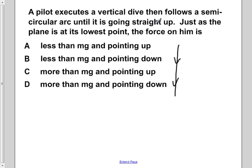Then he's going to go into a circular arc until he's going straight up. So he's going to follow a circular arc, as such, here, until he's going to go straight up once again. So here's the path that our pilot follows. He goes straight down in a vertical dive, goes in the semi-circular arc here, and then he turns around, going straight back up.